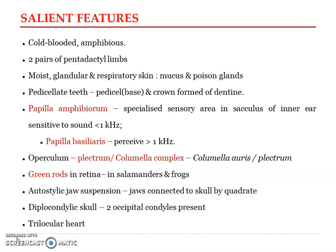Amphibians have moist glandular skin and two pairs of pentadactyl limbs. Pentadactyl limbs means each limb possesses five digits. This reflects their tetrapod nature — two pairs of limbs, each ending in five digits.